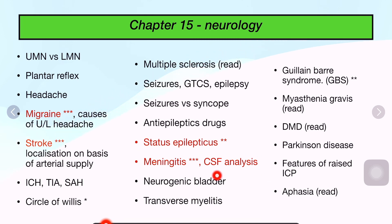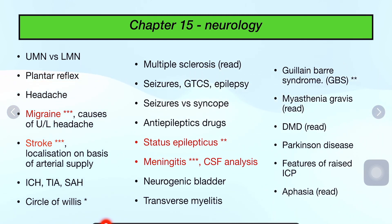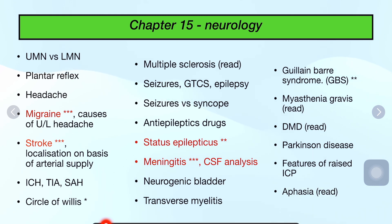GBS was asked in the paper; GTCS can also be asked. So migraine, stroke, status epilepticus, and meningitis are four very, very high-yield topics in neurology.